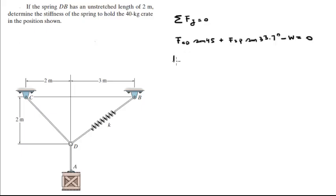So 1.89 K, which is what we just found, times the sine of 45, plus the force of the spring, which is 1.61 K, times the sine of 33.7 degrees.